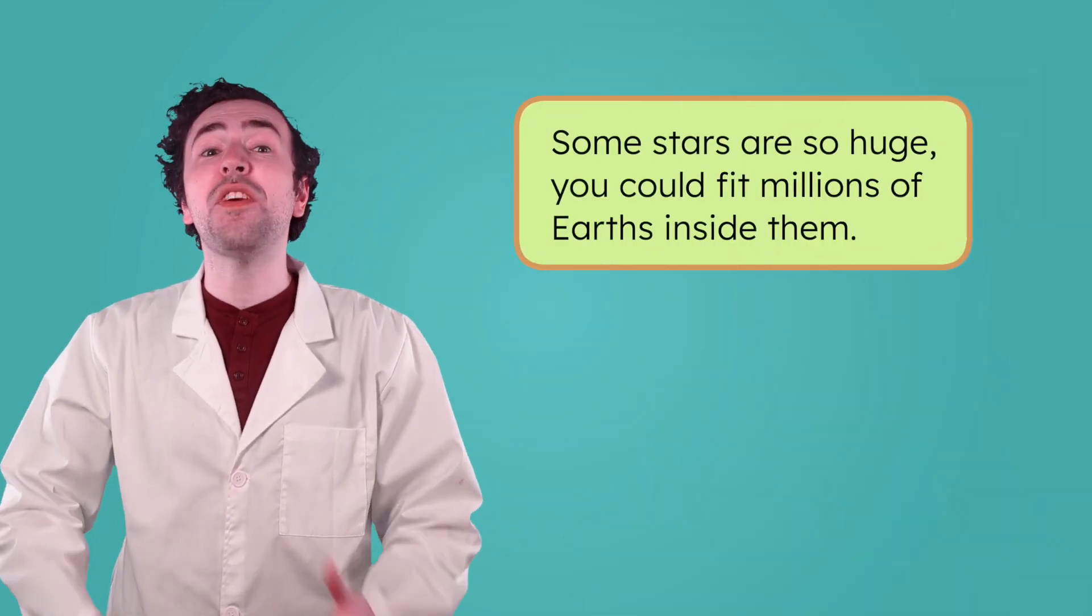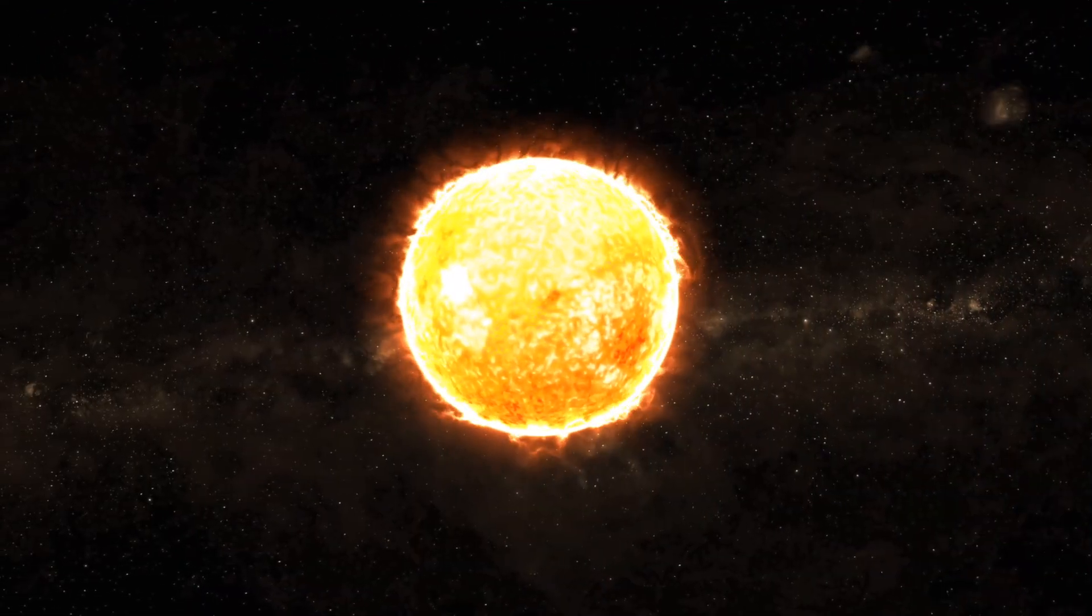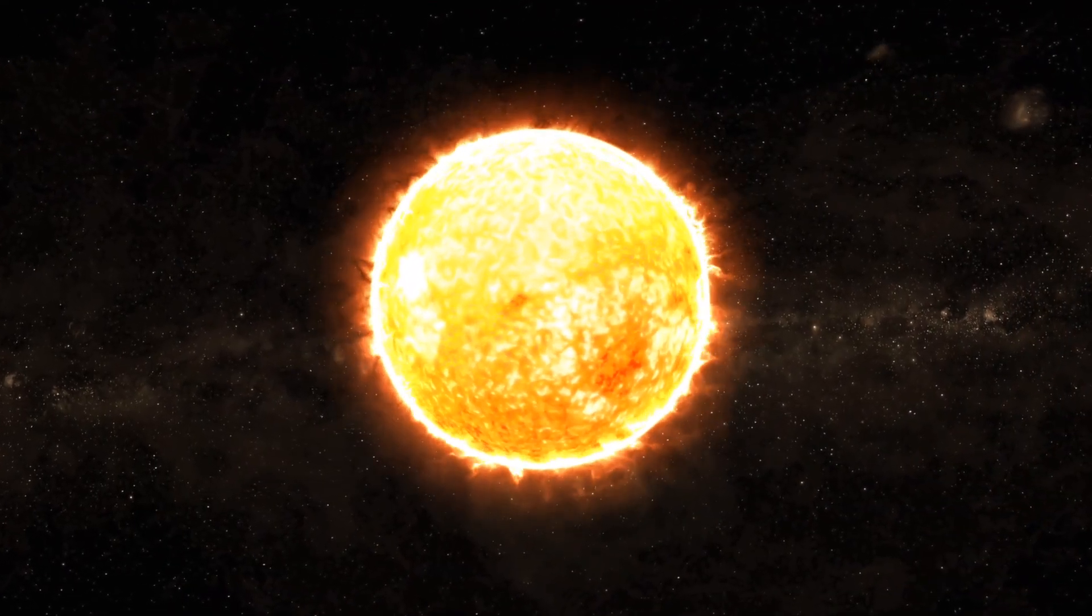We see stars as tiny dots twinkling in the night sky. They look small, like someone poked tiny holes in a big dark blanket. But don't be fooled. Stars aren't just big, they're really, really big. Some stars are so huge you could fit millions of Earths inside them. If we could see a star up close, we'd find out it's not just a little twinkle. In fact, you already know one star pretty well. It's the center of our solar system. Can you guess what I'm thinking of?